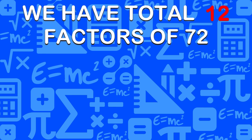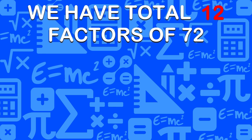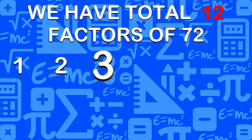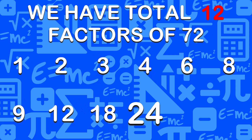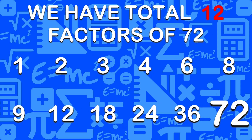So we found 12 factors of 72: 1, 2, 3, 4, 6, 8, 9, 12, 18, 24, 36, 72.